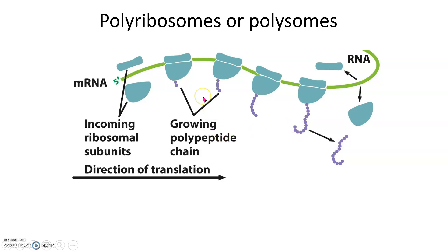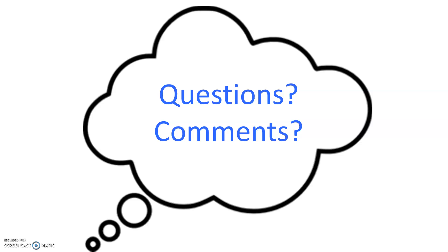Sometimes you have more than one ribosome on an mRNA molecule. When that occurs, it's referred to as a polyribosome or polysome. If this is an mRNA molecule that you need a lot of protein from, you can have many ribosomes on the same molecule to help churn out those proteins in less time. That's it for our tRNA and rRNA molecules. Next, we're going to talk about the steps.